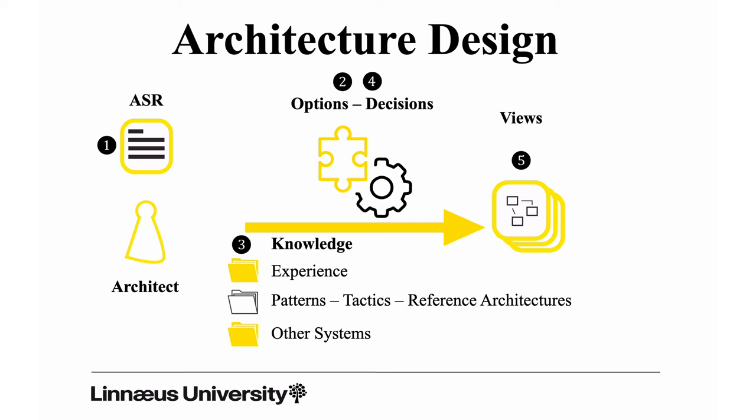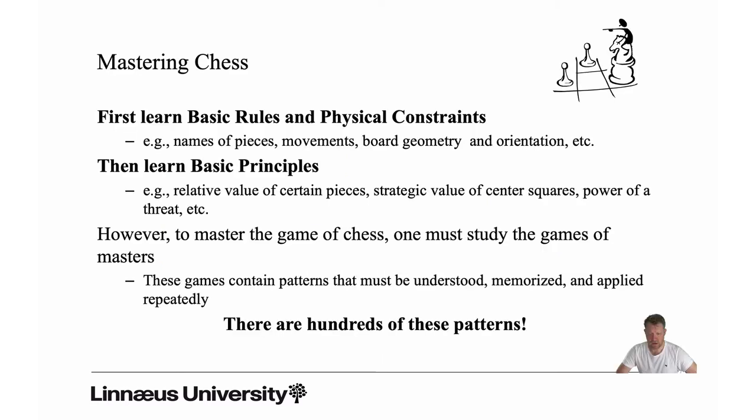There is a nice analogy with the game of chess. There are distinct steps you pass on your path towards becoming a master. First, you learn the basic rules and physical constraints — the board geometry, orientation, the different pieces and how you move them. When you have learned these basic rules, you move on to learn the basic principles, which is where you introduce strategy — which pieces are more valuable, which positions on the board are more valuable.